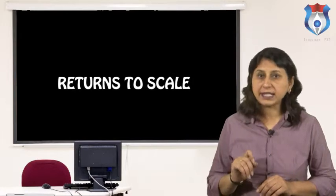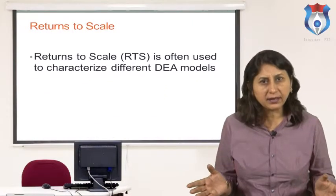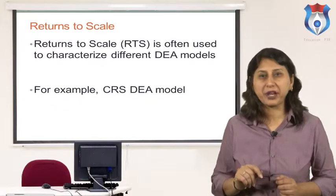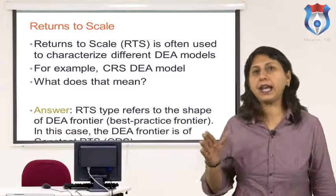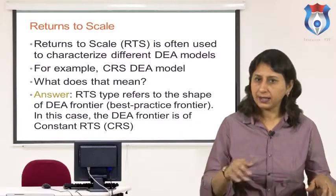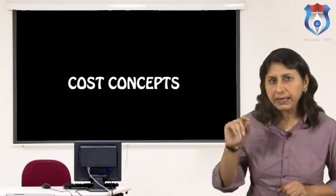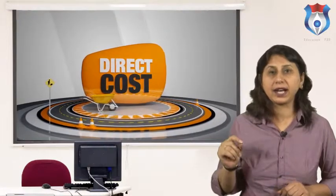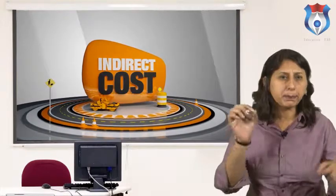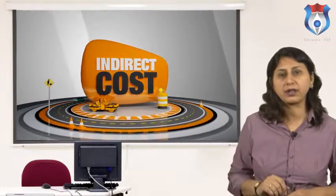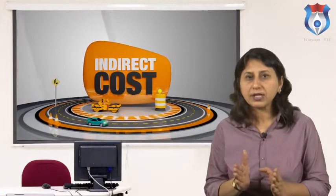Returns to scale (RTS) characterize different DEA models. For example, the CRS DEA model — the RTS type refers to the shape of the DEA frontier, or best practice frontier. In this case the DEA frontier is of constant RTS (CRS). Regarding cost concepts: direct costs are those costs that can be specifically and exclusively identified with a particular cost object — for example, the wood for manufacturing a particular type of desk in an organization. Indirect costs are those costs that cannot be identified specifically and exclusively with a given cost object — for example, the salaries of factory supervisors or the rent of the factory.